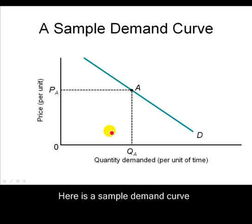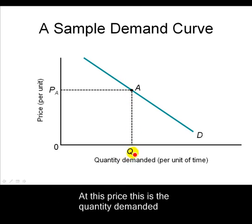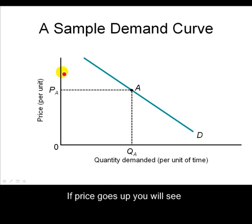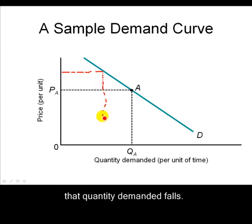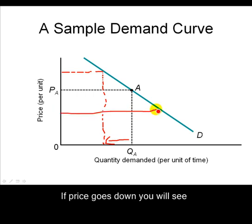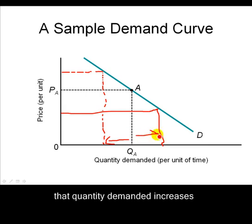Here's a sample demand curve. At a given price, this is the level of quantity being demanded. If price goes up, you will see that quantity demanded actually falls. And if prices go down, you see that quantity demanded actually increases.